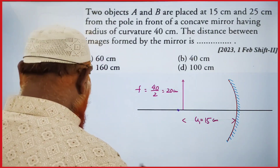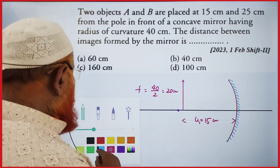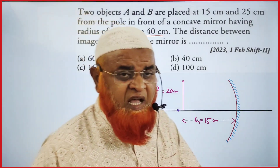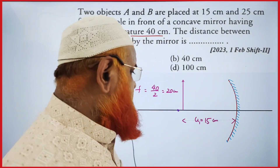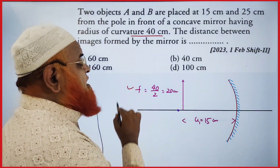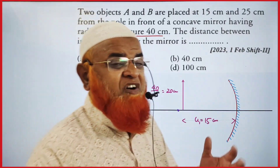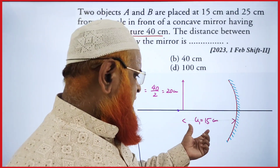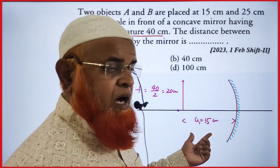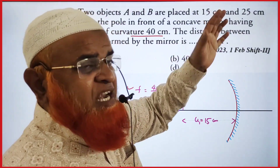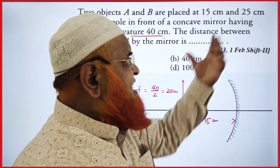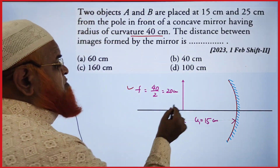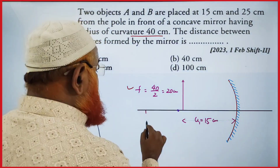The radius of curvature is 40 centimeters. If the radius of curvature is 40 centimeters, then the focal length is going to be half of that, which is 20 centimeters. The object is first placed at 15 centimeters, and then it is placed at 25 centimeters.